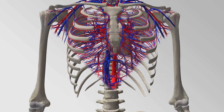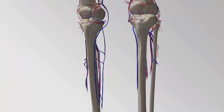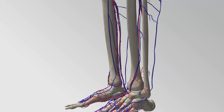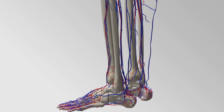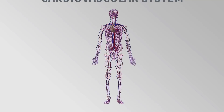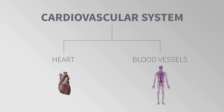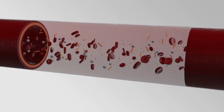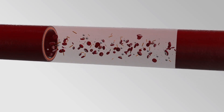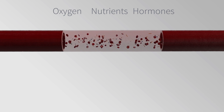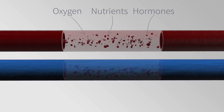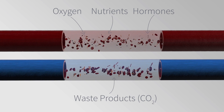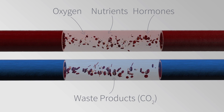The cardiovascular system transports blood around the human body and is made up of the heart and blood vessels. Blood carries oxygen, nutrients, and hormones to the tissues of the body, and carries waste products such as carbon dioxide away from the tissues.